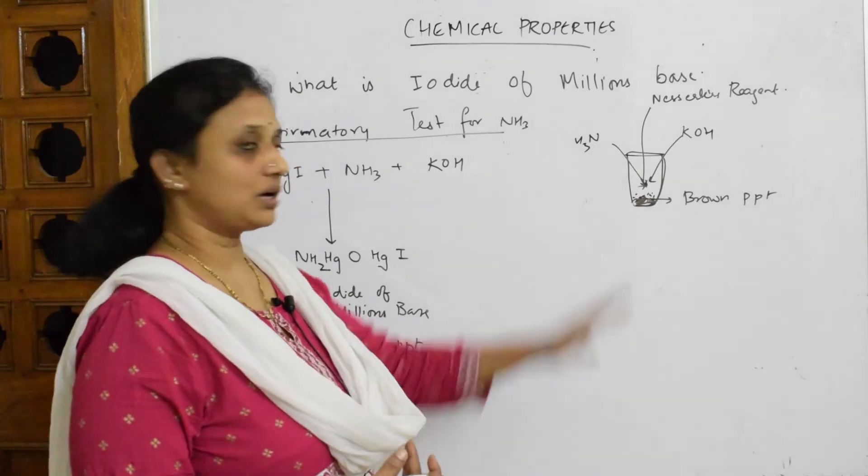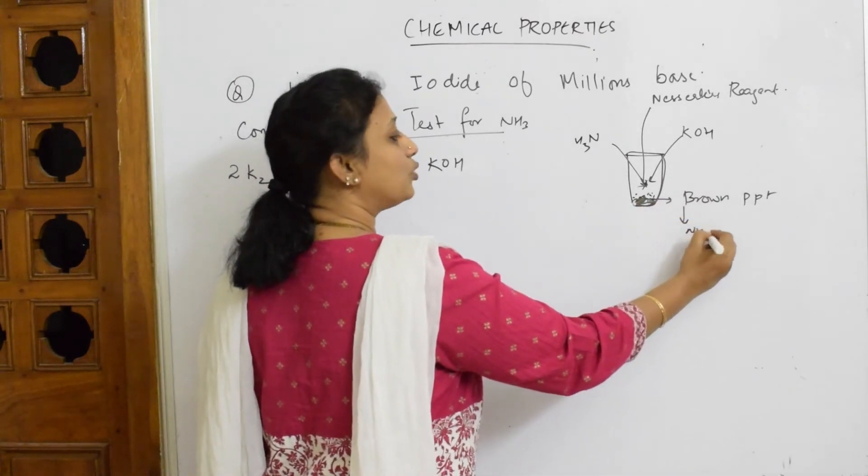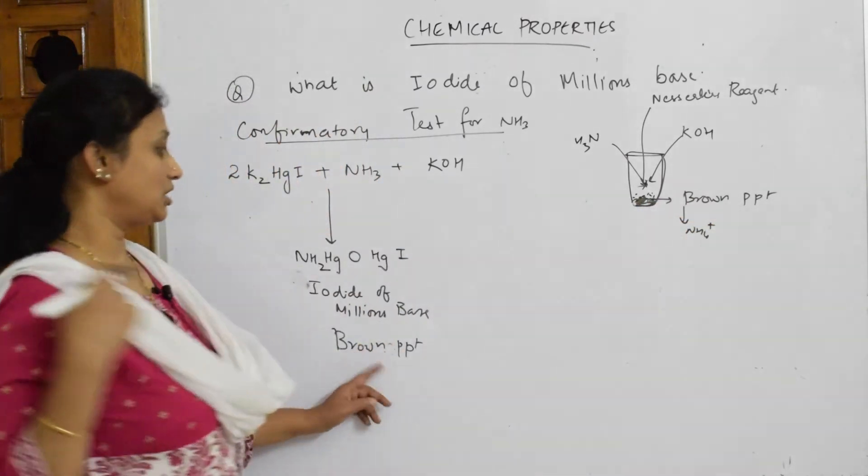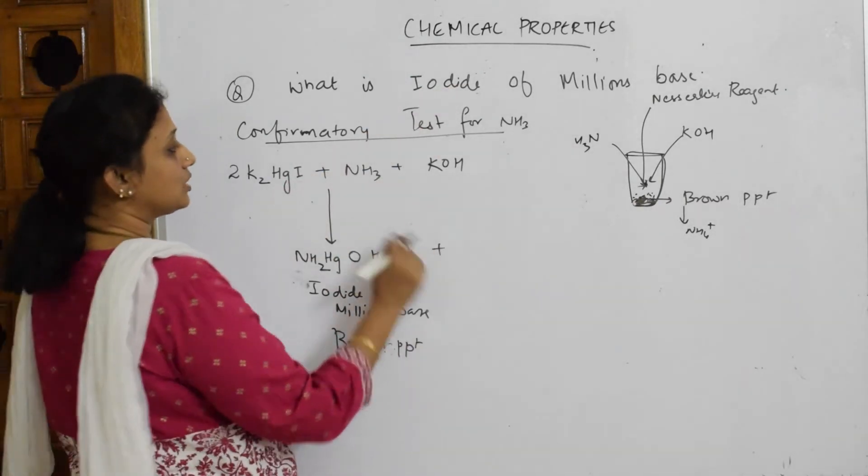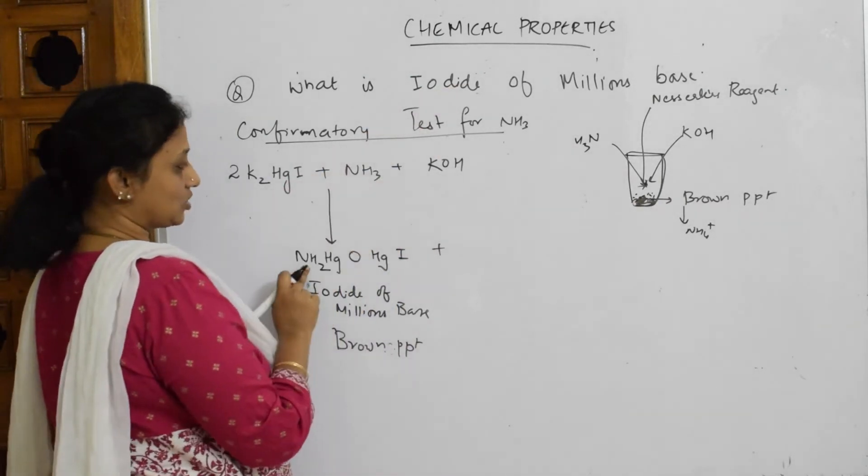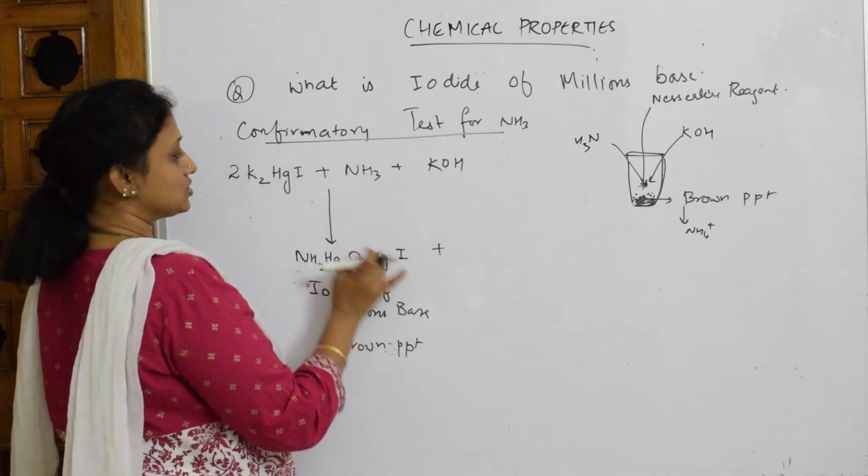So ammonia is confirmed, reported to your teacher. So this brown PPT indicates the presence of ammonium cation. Now this is called iodide of million's base. Let us write the leftover products. We have potassium iodide and water.